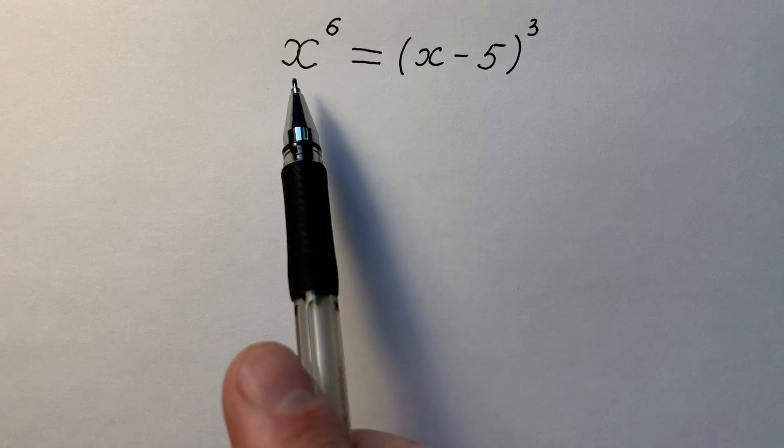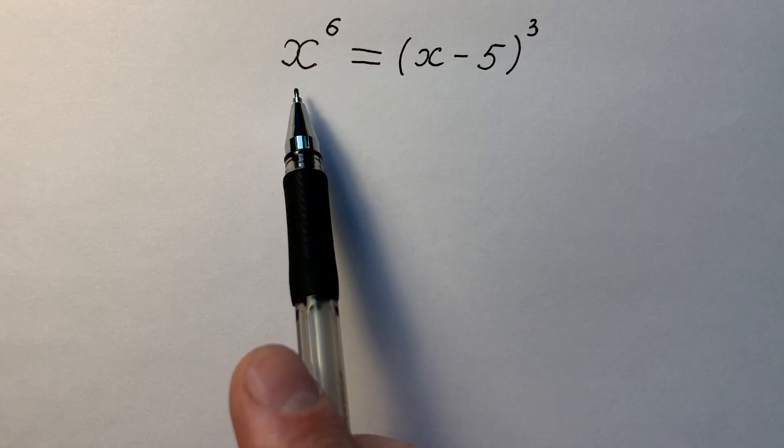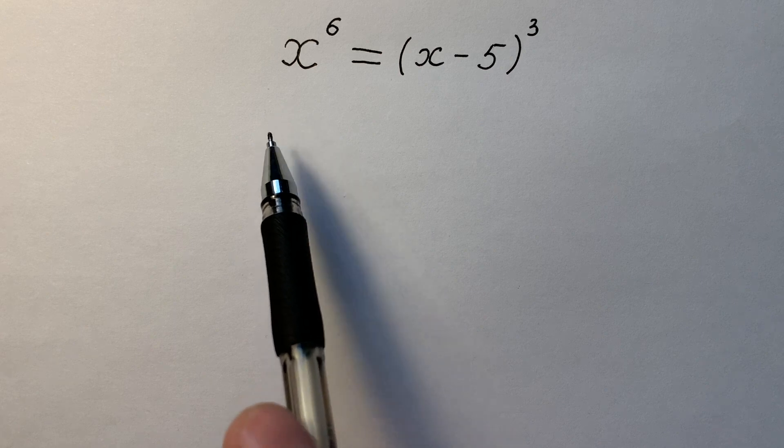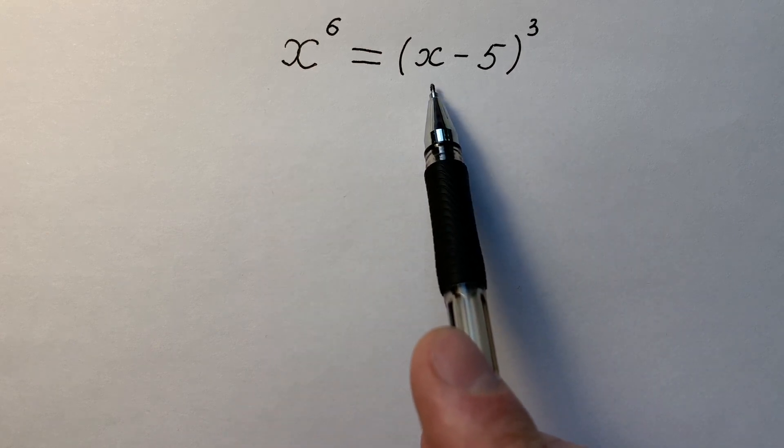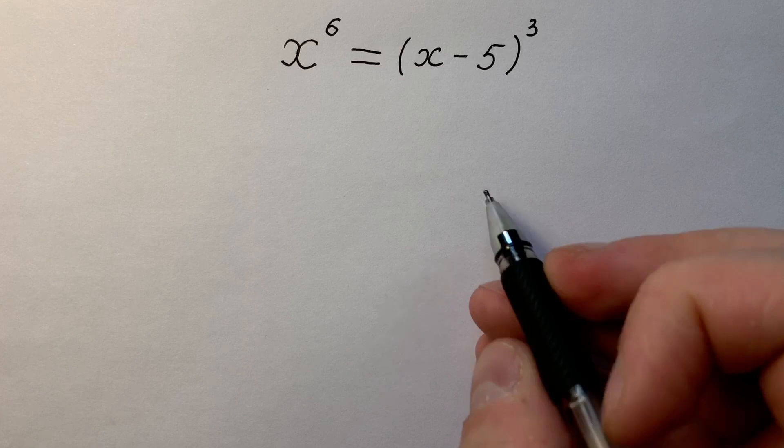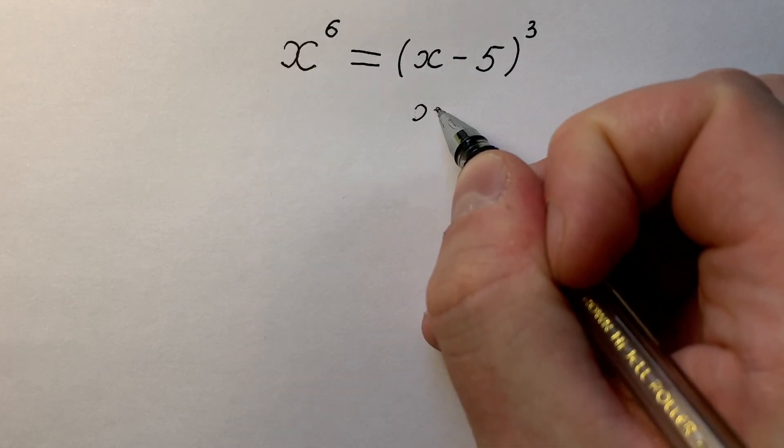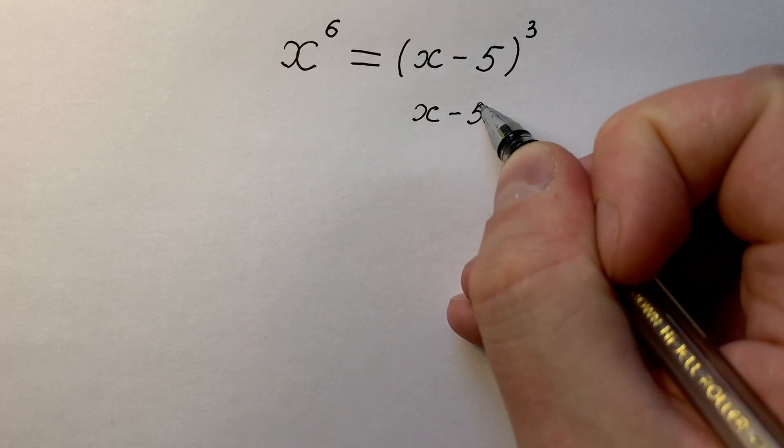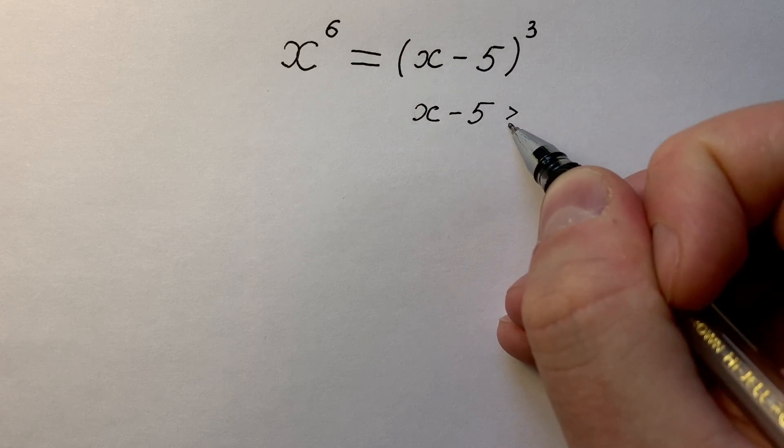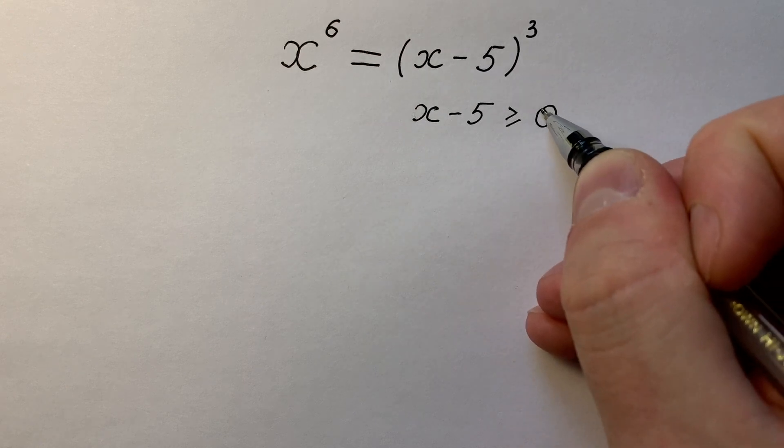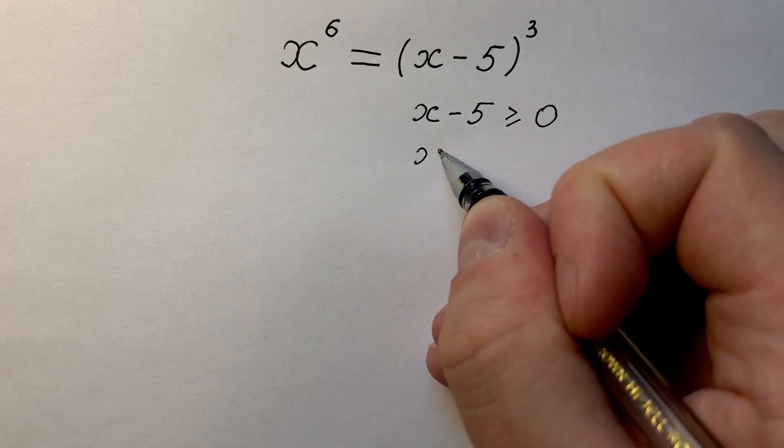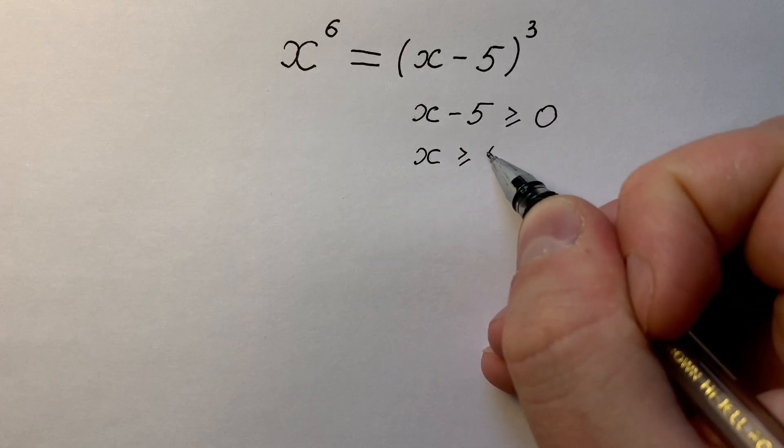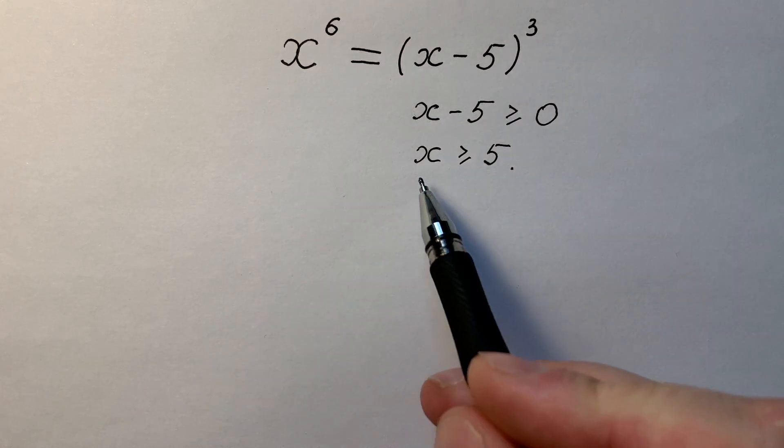First of all let's look at the left side. x to the power of 6 is more or equals to 0. So the right side is also more or equals to 0. We have to write that x minus 5 is more or equals to 0. So x is more or equals to 5. We have to remember this fact.